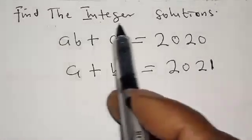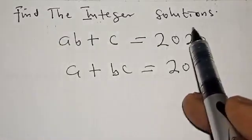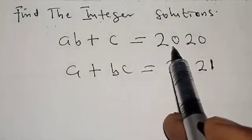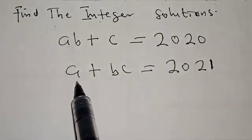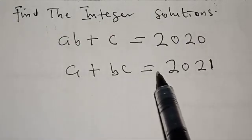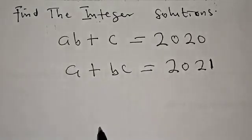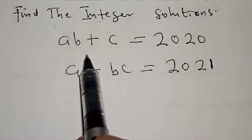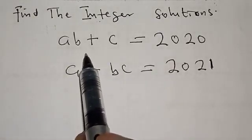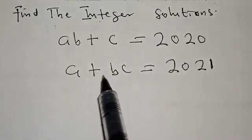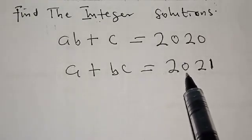Find the integer solutions. AB plus C is equal to 2020. A plus BC is equal to 2021. Hi everyone, welcome to my class. In this class, we want to find the integer solutions from these given equations: AB plus C equals 2020, and A plus BC equals 2021.